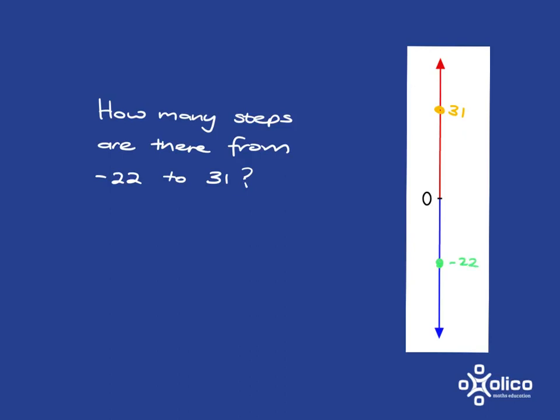But the idea I can use is the same one I've used before, which is that where is 31? It's 31 steps above the 0. And where is negative 22?